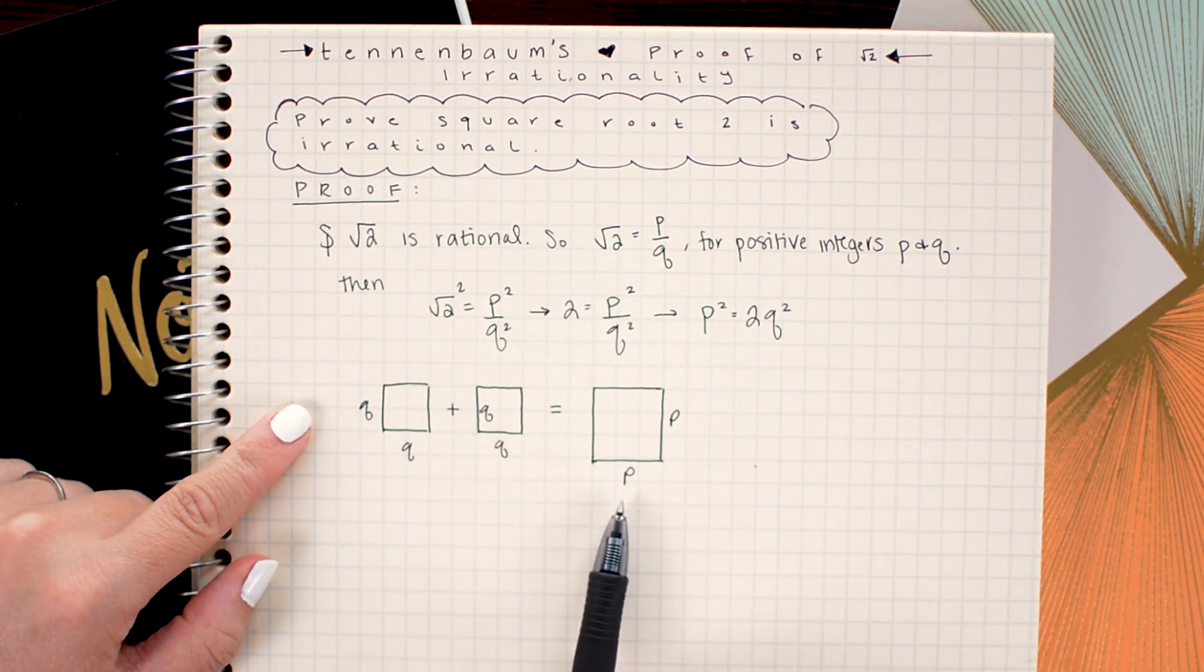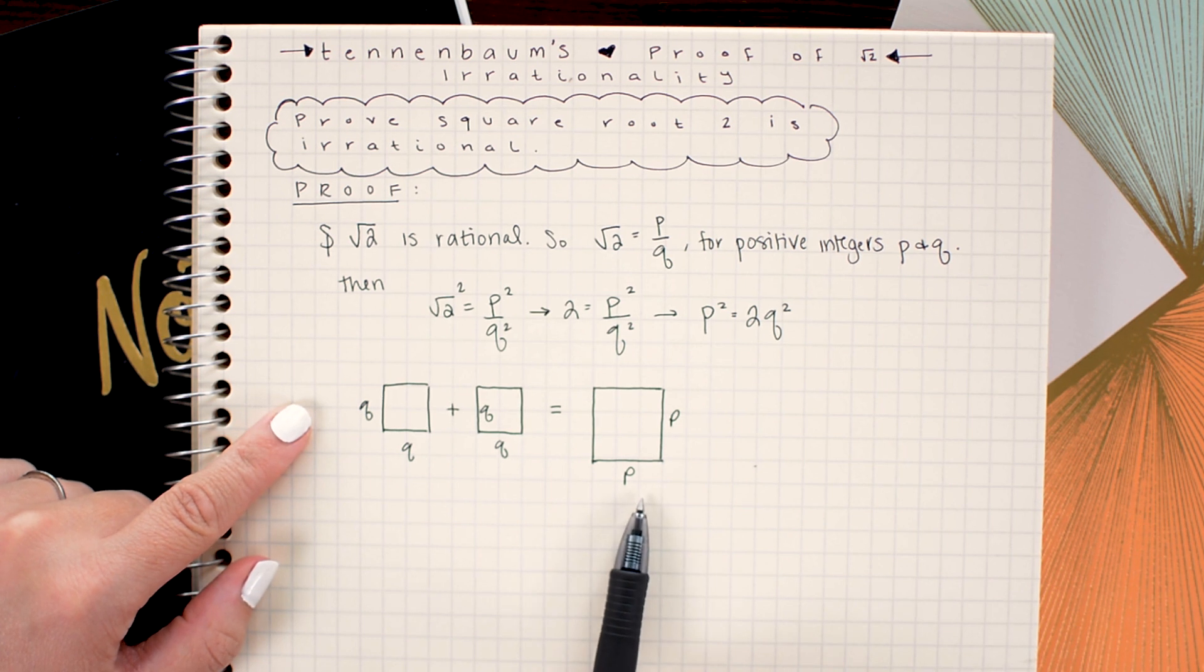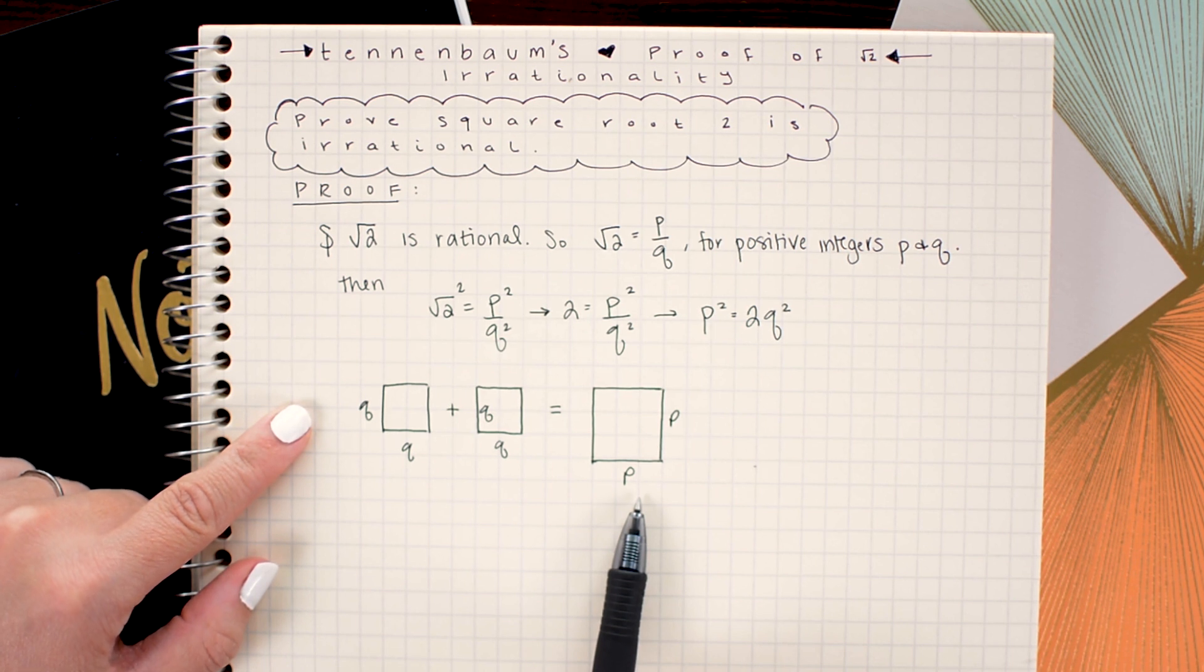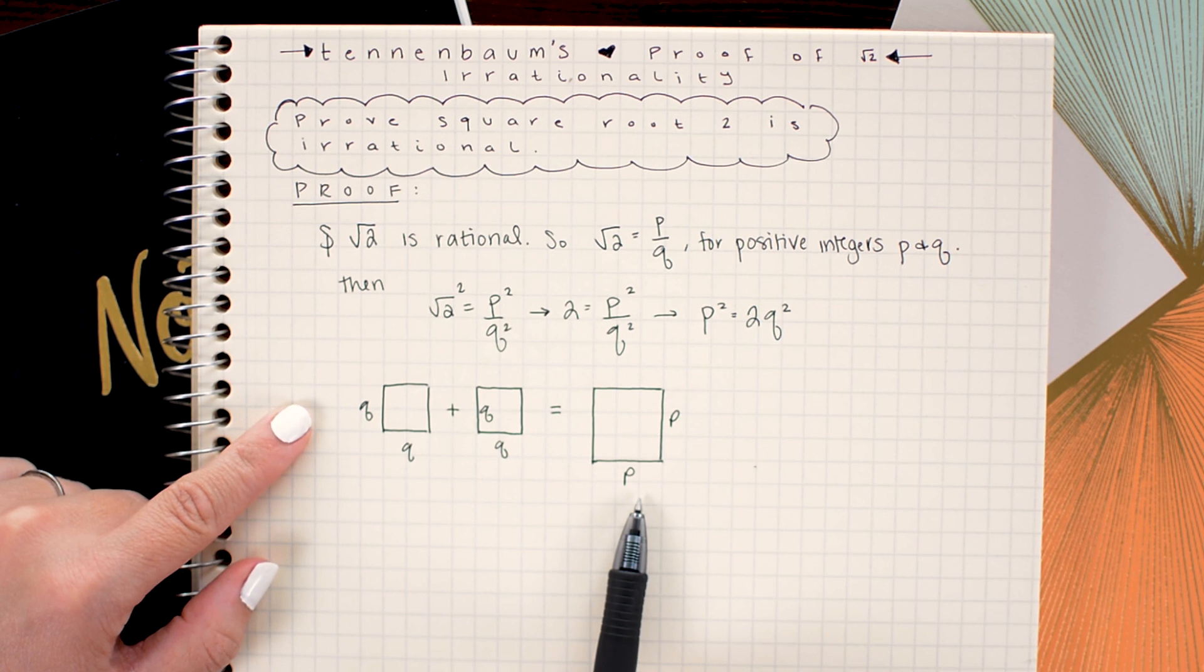Our next step is to assume that this p by p square is the smallest such integer by integer square we can make. This is similar to the assumption we made in our previous proof about the smallest integers that we could reduce. If you saw that proof you'll know what I'm talking about. So I'm going to write down this assumption because this is a critical step to proving our contradiction.